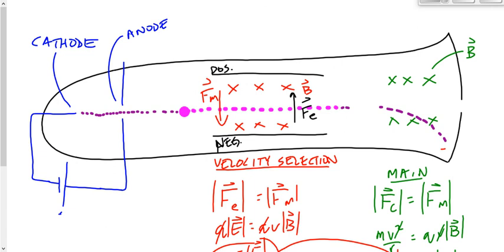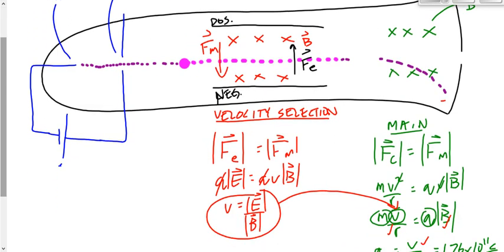There's one more thing to address. We've got the velocity selection chamber where the selected particles go undeflected, and the main chamber where they experience a magnetic field and go in a circle. But something's happening back in the acceleration chamber too: the cathode rays — or as we now know them, electrons — are accelerating as they go from the cathode to the anode. The analysis of a charged particle accelerating is like a car going down a hill: we use conservation of energy, EI equals EF — electric potential energy equals kinetic energy.